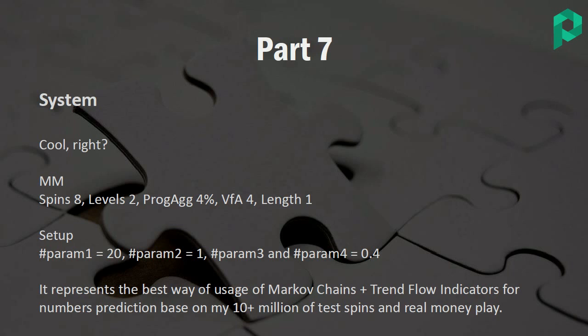Here is my setup. I'm using money management with 8 spins and 2 levels, progression aggressiveness 4%, variance from average 4, and length 1. It's a bit more aggressive, but it's only one cycle — if you lose your progression, it's 16 spins in total.